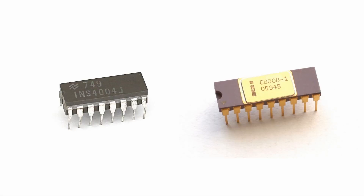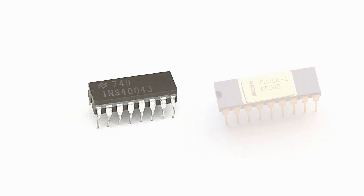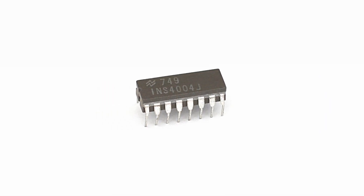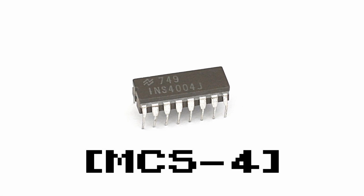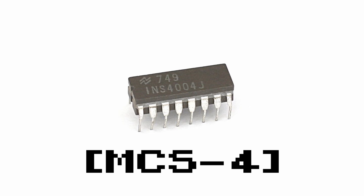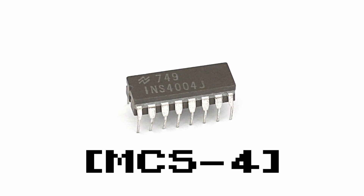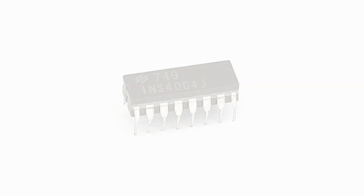Intel's new microprocessors would break from this norm a little, with designer Federico Fagin leapfrogging a few numbers to avoid disrupting the numbering applied to groups of compatible components. After all, this was a microprocessor and could handle many tasks by itself. To form its own compatible family of components, the 4001 control memory, 4002 data storage, and 4003 bus expansion chips were also created.